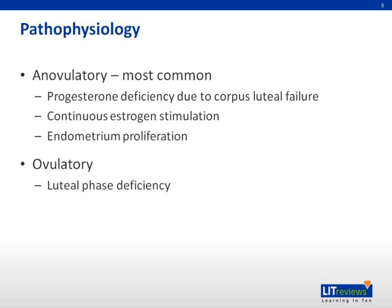Ovulatory DUB can be due to luteal phase deficiency. Luteal phase deficiency causes low progesterone levels, which results in irregular shedding of the endometrium.